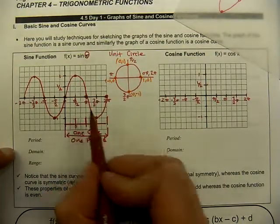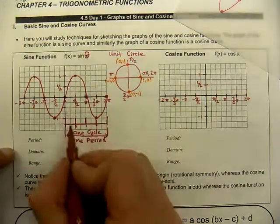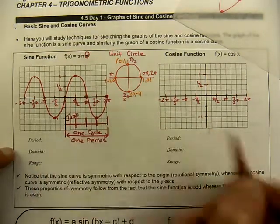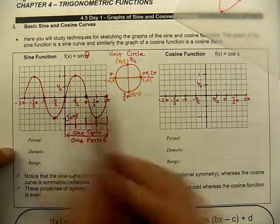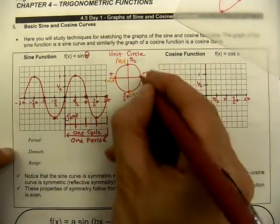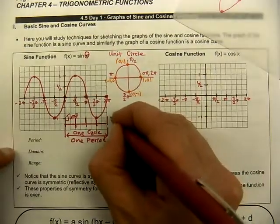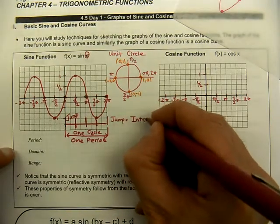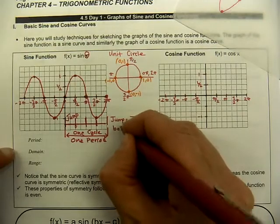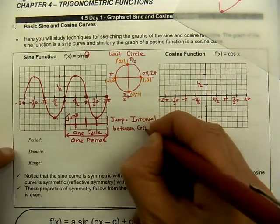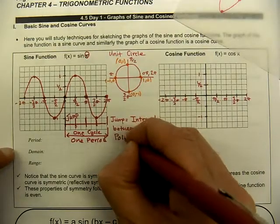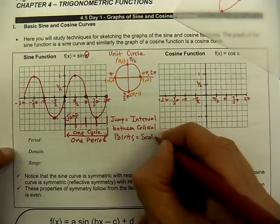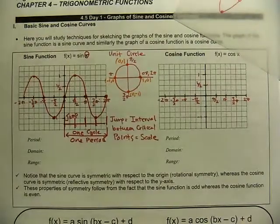Each region corresponds to a quadrant on the unit circle: quadrant one, two, three, and four. We casually call the spacing the 'jump,' though the more precise term is the interval — the interval between those critical points, or equivalently between the quadrant angles. This interval also determines the scale we use on the horizontal axis when we graph.